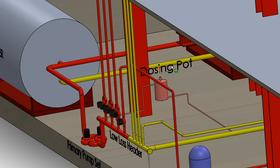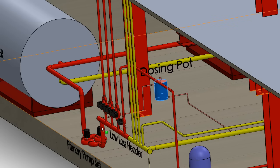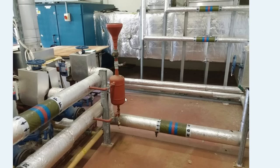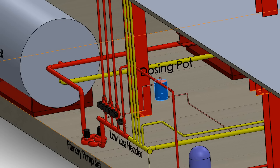Tucked away over here you can see we've got the dosing pot, and that is usually located somewhere plugged across the low loss header. You can see an example there — we've got the main dosing pot and then the two connections from the header just there. The dosing pot just allows chemical inhibitors to be poured into the system and pumped around, and that just keeps it clean and bacteria free. But we'll look more into that in another video.